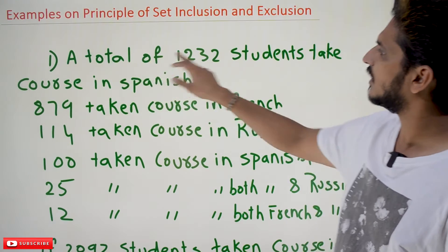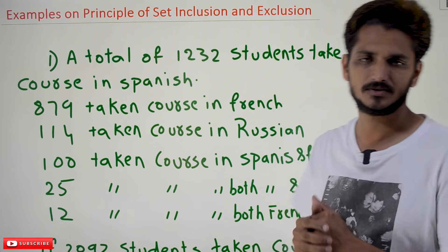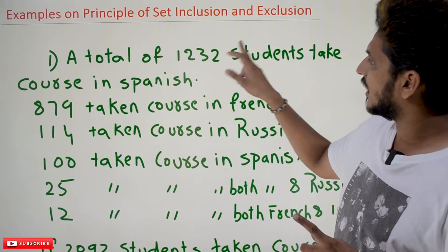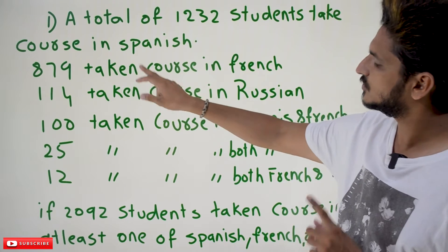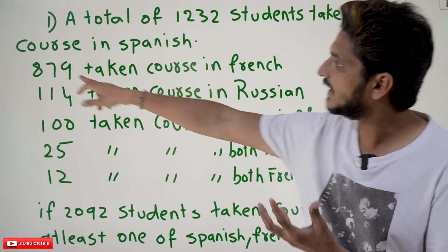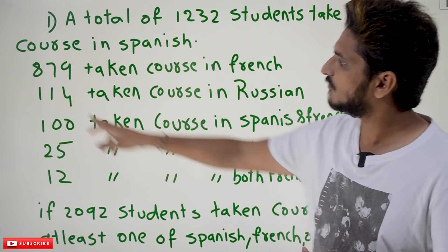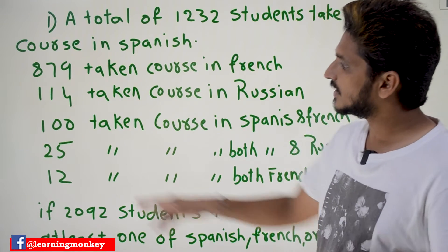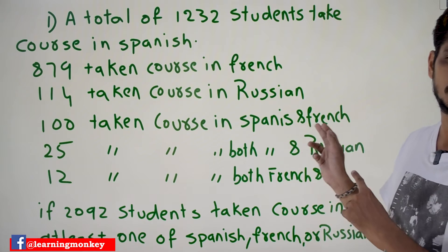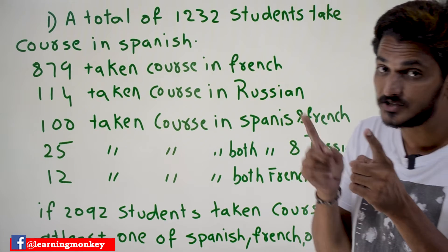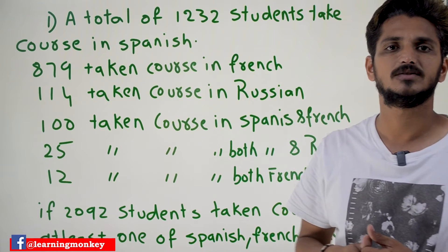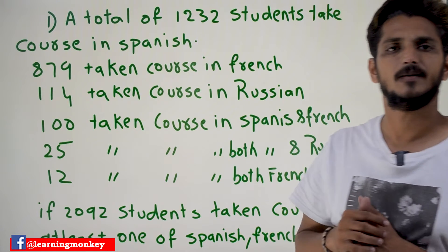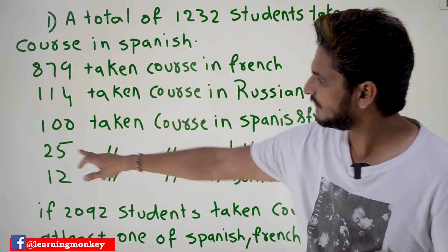A total of 1232 students have taken a course in Spanish, so set A has 1232 elements. Similarly, 879 students have taken a course in French, so set B contains 879 elements. Similarly, 114 students have taken a course in Russian, so set C contains 114 elements. 100 students have taken courses in both Spanish and French, so the intersection of A and B contains 100 elements.